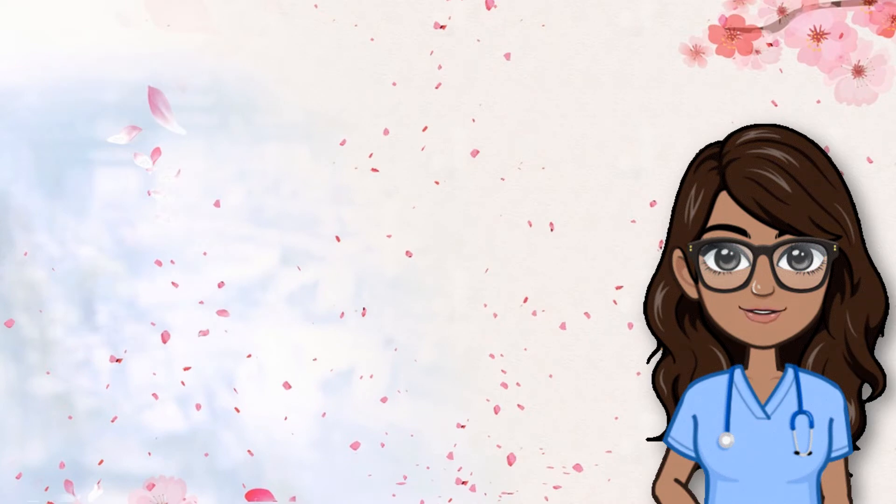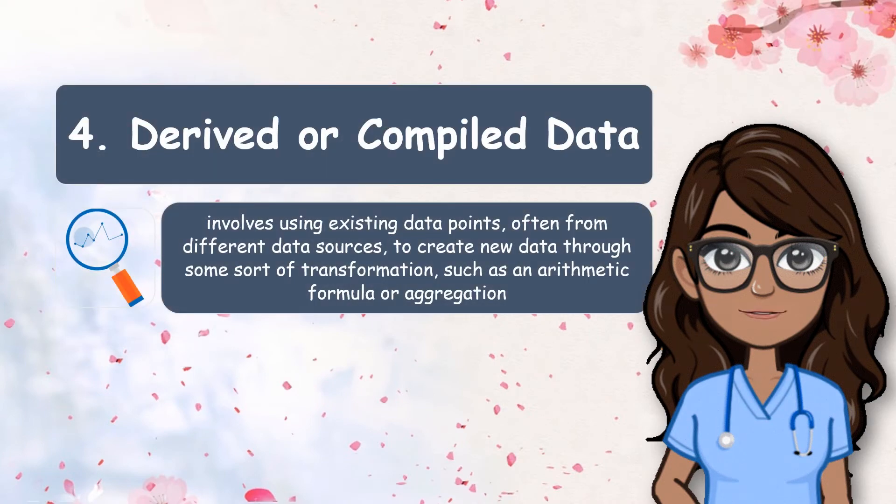Number four is derived or compiled data. It involves using existing data points, often from different data sources, to create new data through some sort of transformation such as an arithmetic formula or aggregation. However, it is important to note that in qualitative research you will be generating data that is primarily in the form of words, not numbers. Qualitative data describes qualities or characteristics which may be difficult to precisely measure and analyze.